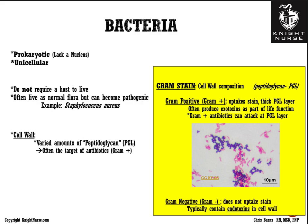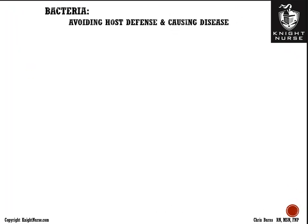Gram-negative bacteria don't take up the gram stain because they lack the thick peptidoglycan layer, making gram-positive antibiotics less effective against them — this is why a gram stain is often a first-line move. Bacteria are also classified by shape: cocci are round, and can be diplococci (doubled), streptococci (in strips), or staphylococci (bundled like grapes). Bacilli are gram-negative rods; the most dangerous gram-negative rod commonly encountered is E. coli.